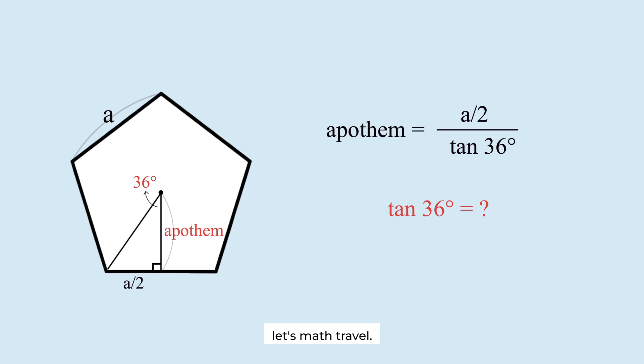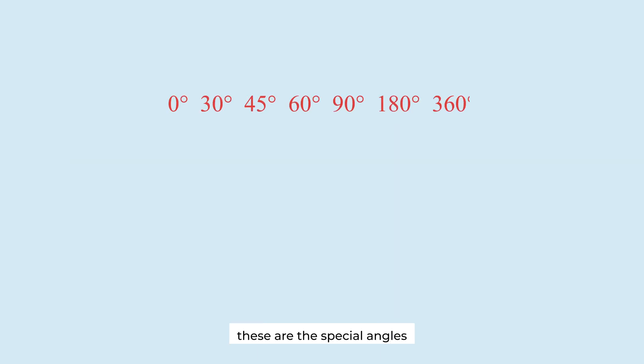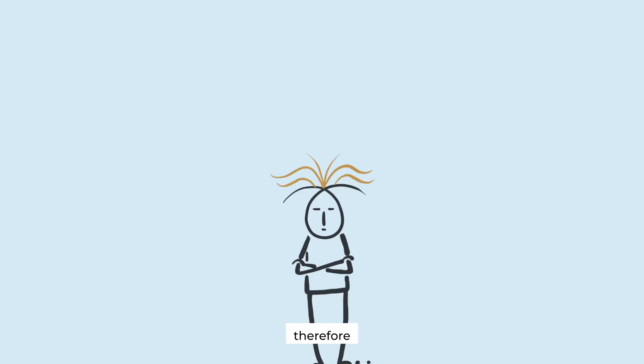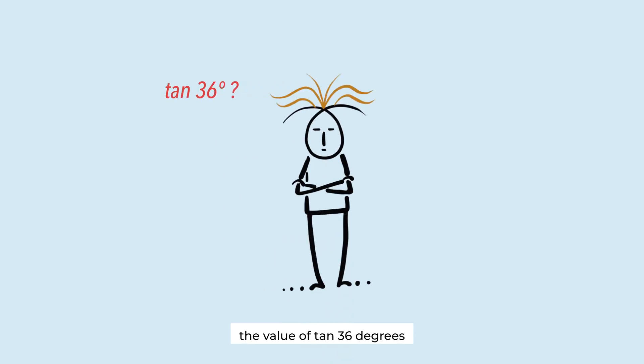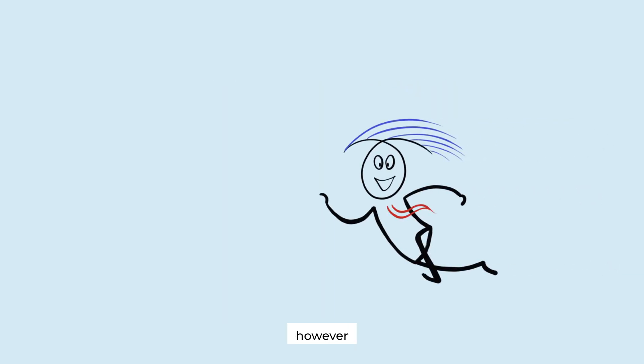Let's math travel! These are the spatial angles commonly encountered in geometry. 36 degrees does not exist anywhere. Therefore, the value of tangent 36 degrees is not generally known. However, there is a way to calculate this value.